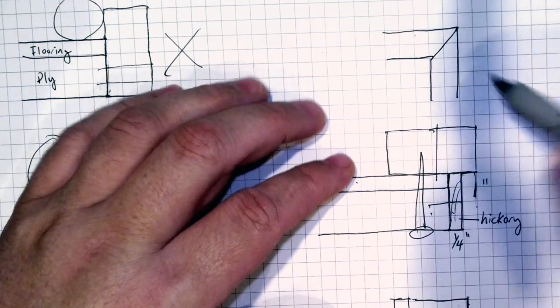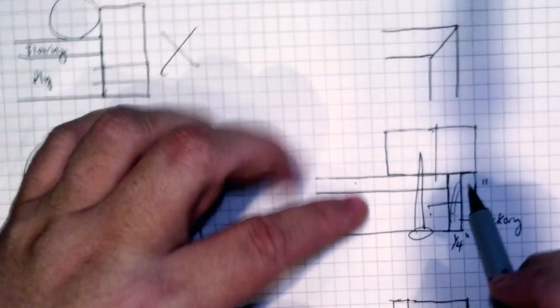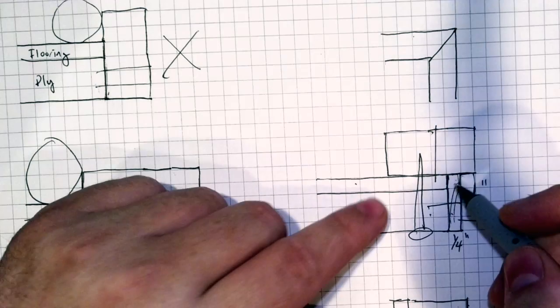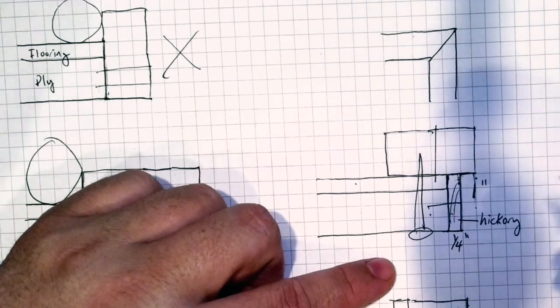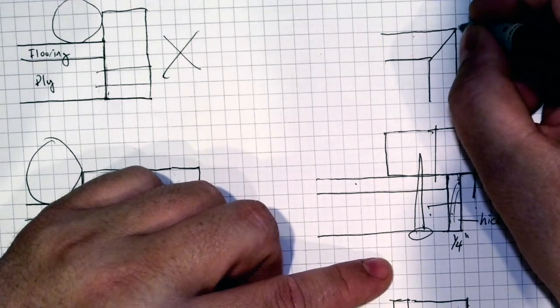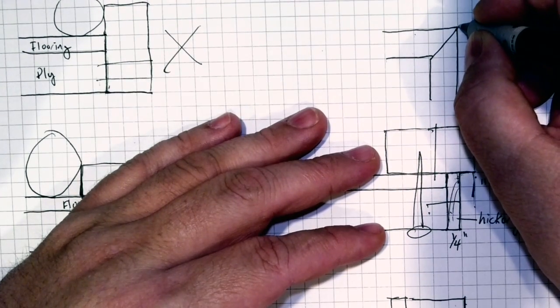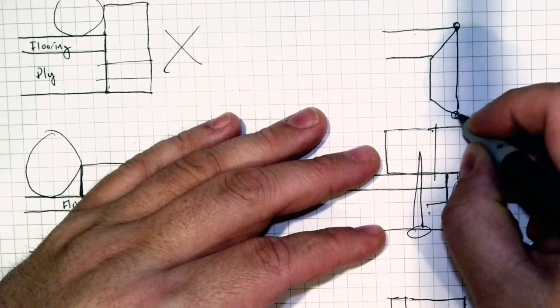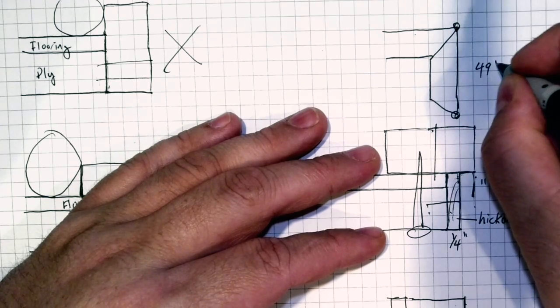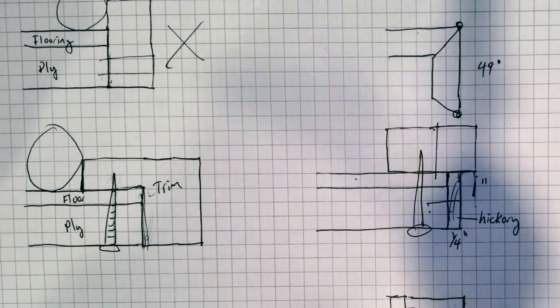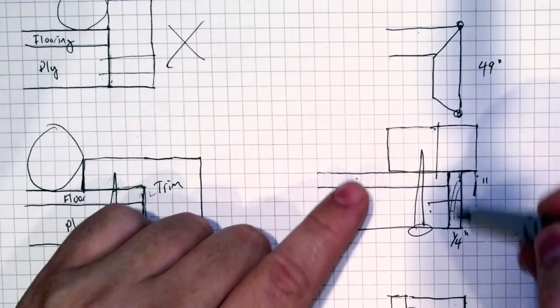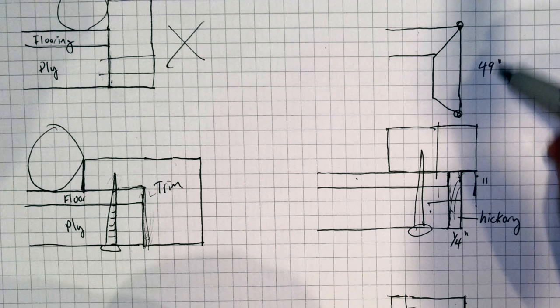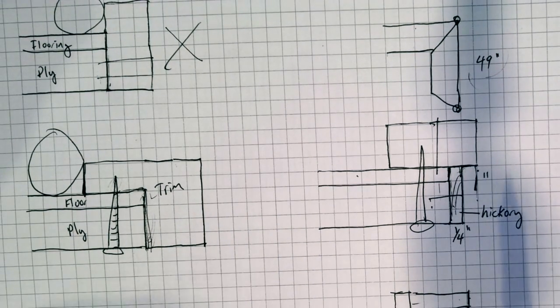We measured how wide this piece was plus a quarter on both sides, plus this quarter on both sides. That came to, in our particular case, that these outside corner to the equivalent outside corner was 49 inches. You'd have to measure your own depending on how you decided to trim things off.